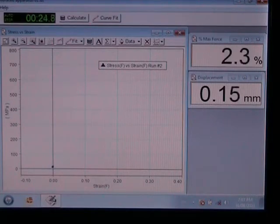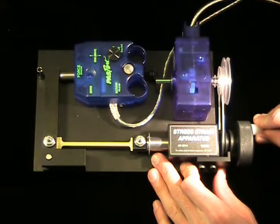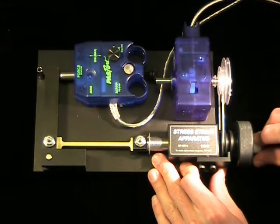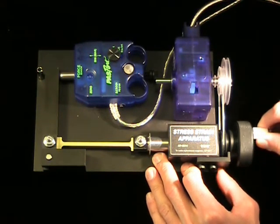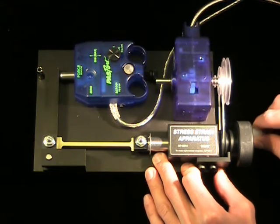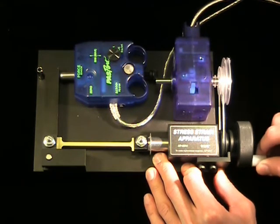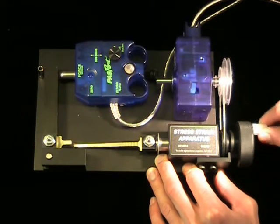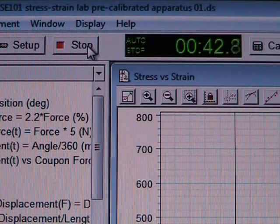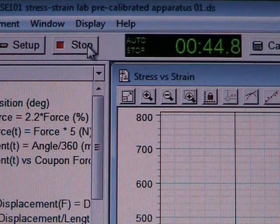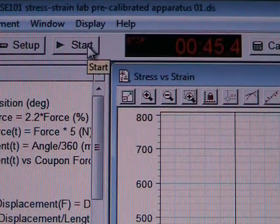Once you exceed 2 or 3% of the maximum force, you can turn the crank more quickly. Turn the crank smoothly until either the sample fails or the apparatus cannot turn anymore. Once your sample has failed or the apparatus cannot move any further, click the Stop button in the upper left corner of your screen.